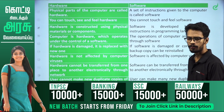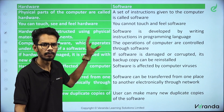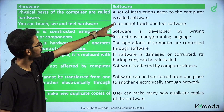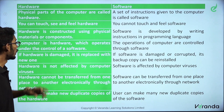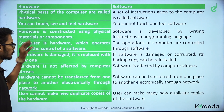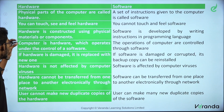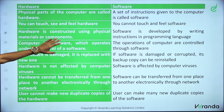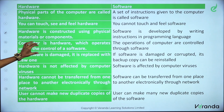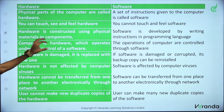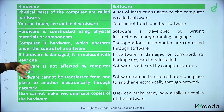The difference between hardware and software: hardware is a physical part of a computer and software is a set of instructions. You can touch, see, and feel hardware. But software cannot be touched. Hardware operates under the control of software. Written instructions in a programming language control the hardware.